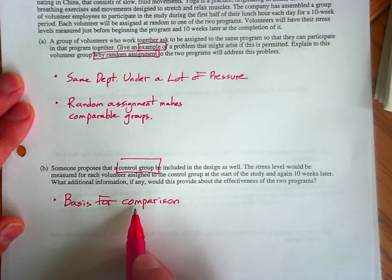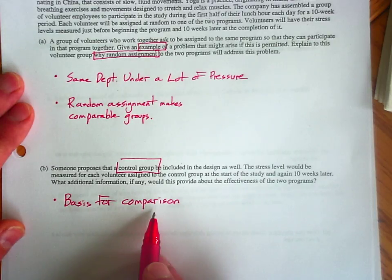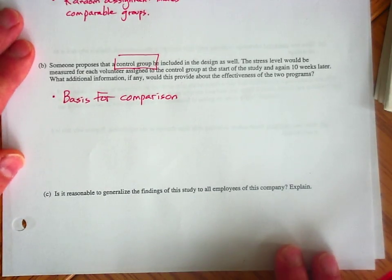Maybe stress level overall is falling and it's not really due to either the Tai Chi or the yoga. If that's the case, I'll be able to see it in the control group. What's important is the control group gives us a basis for comparison.